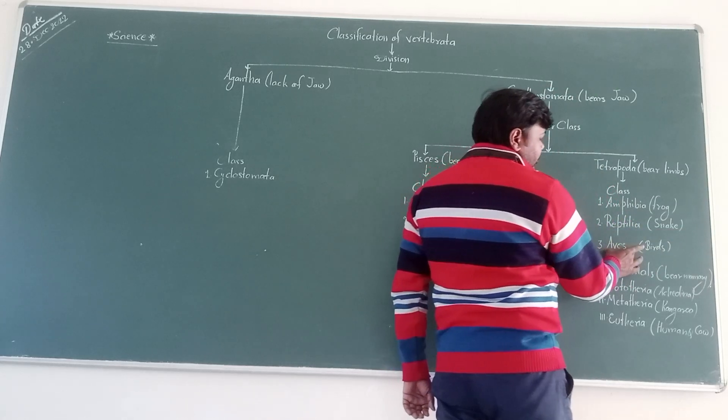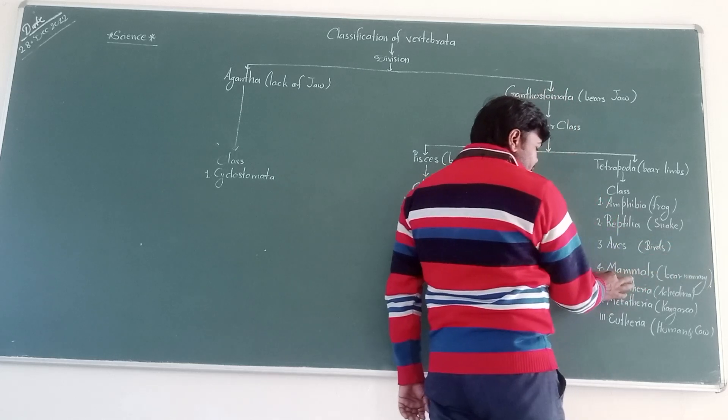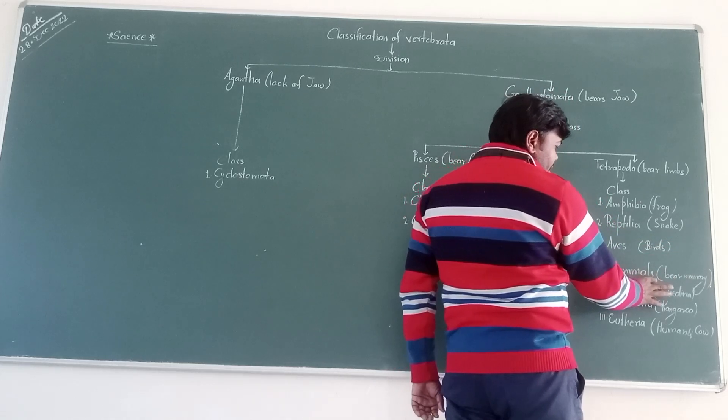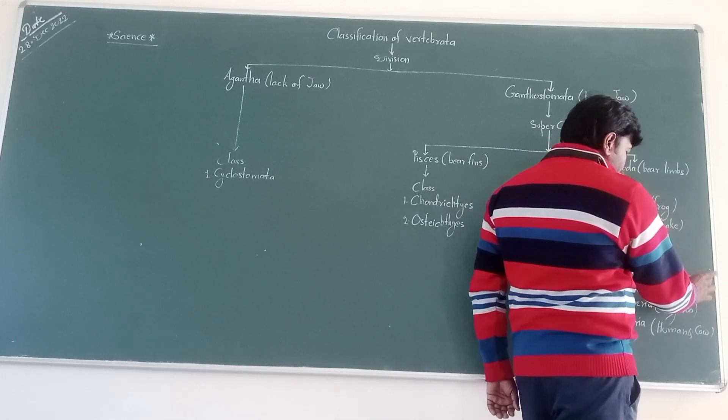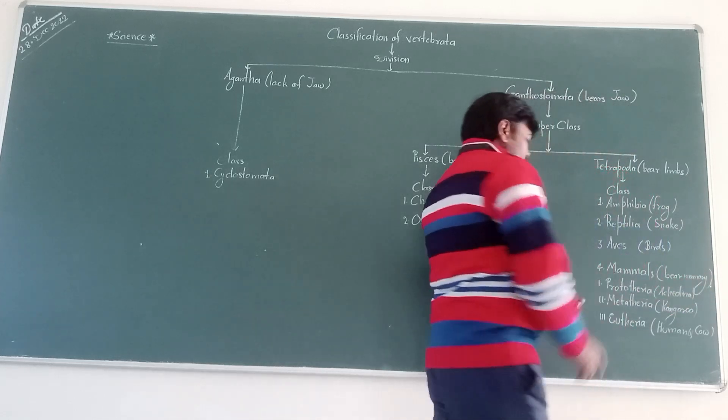Next, Aves. Aves which are examples of birds. Next, Mammalia. Mammals have mammary glands and are also divided into three classes.